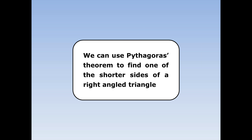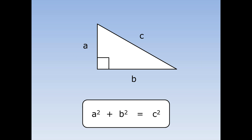We can use Pythagoras' theorem to find one of the shorter sides of a right angle triangle. We use it in this format: A squared plus B squared equals C squared, where A and B are the shorter sides — it doesn't really matter which way round they go — and C is the hypotenuse, or the longest side.